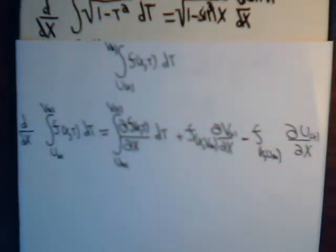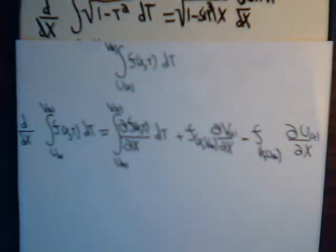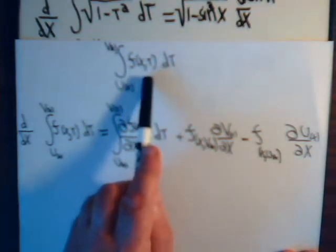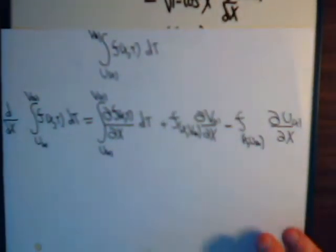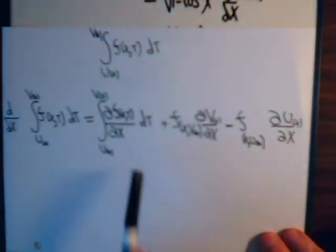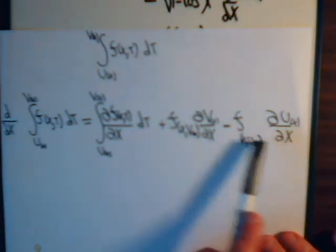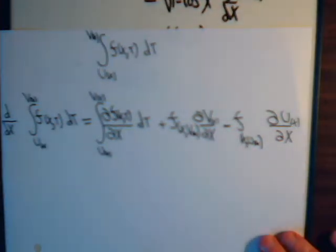Only here, it was a simpler problem because the formula that we developed in the last video was when we have a function of more than one variable. So, for our problem here, this term came out to be zero, and we had to consider only these two terms here in order to get the derivative of our integral.